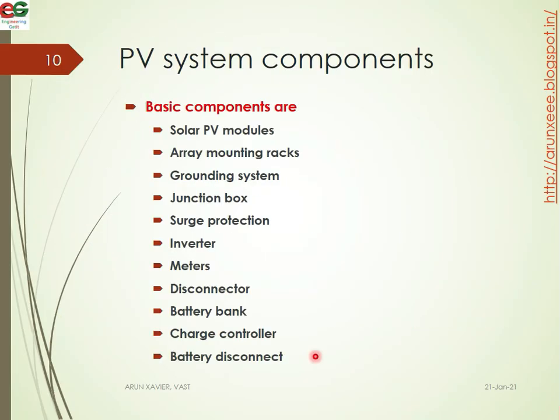Now we look at PV system components. The basic components of a PV system include: solar PV modules, array mounting racks, grounding system, junction box, and charge protection units. When a battery bank is used, a charge control component is also included.